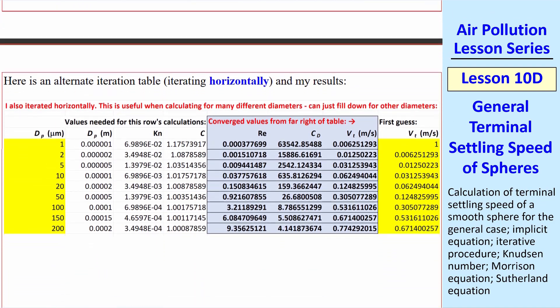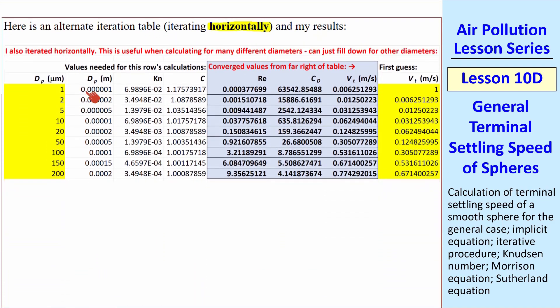that an alternate way is to iterate horizontally, where I set up my diameter, Knudsen number, Cunningham correction factor, and here's my first guess for vt. To the right are my calculations of Reynolds number and Cd. And I keep repeating that,